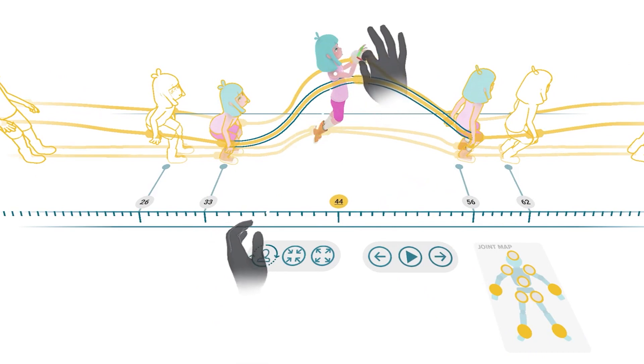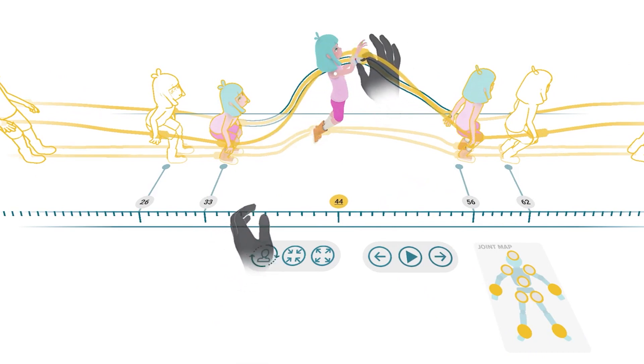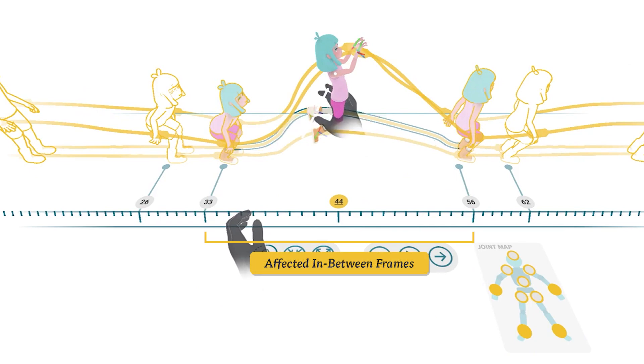One can then use direct manipulation to pose the character into a new position and have those changes propagate across all frames between those two keyposes.